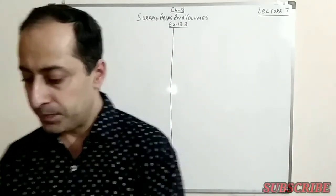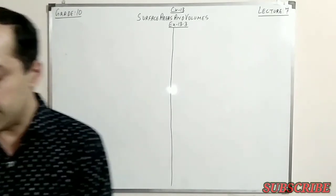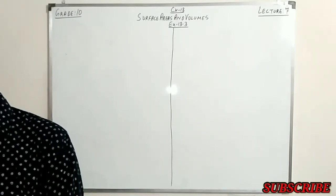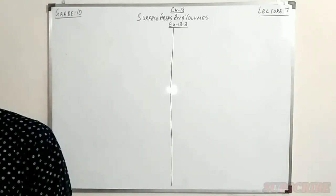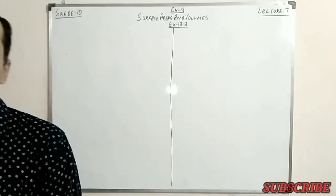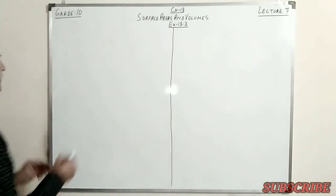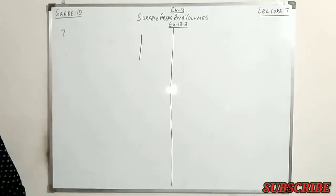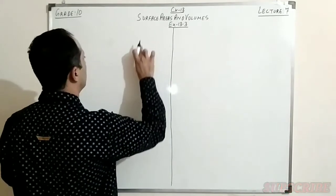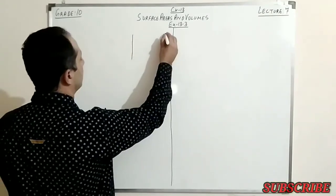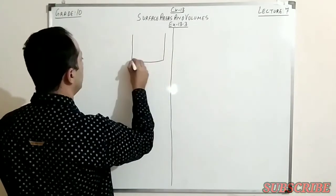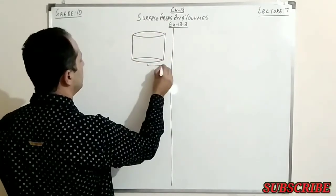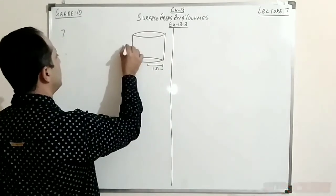In question number 7, it is given: a cylindrical bucket 32 cm high and with radius of base as 18 cm is filled with sand. The bucket is emptied on the ground and a conical heap of sand is formed. If the height of the conical heap is 24 cm, find the radius and slant height of the heap. Now let's draw the diagram first. The cylindrical bucket has a height of 32 cm and a base radius of 18 cm.